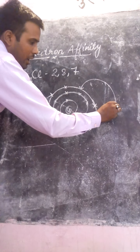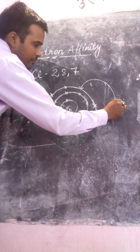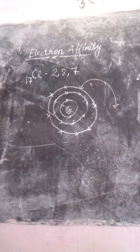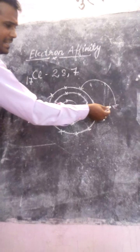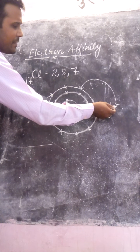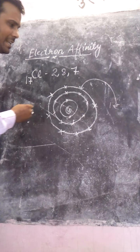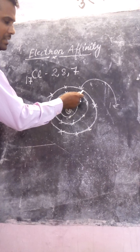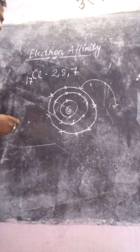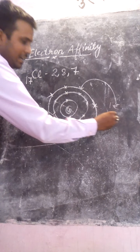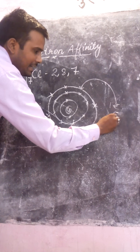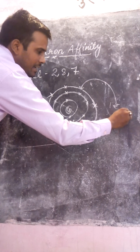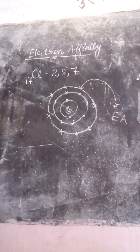One additional electron is required to complete the octet of the chlorine atom. Whatever energy is released while adding that extra electron in the outermost shell of chlorine is called electron affinity.